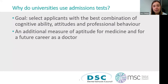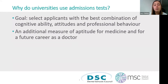So why do we use admissions tests in universities? The goal is to select applicants with the best combination of cognitive ability, aptitudes, and professional behaviours. It's not just about UCAT and BMAT scores — universities also look at your personal statement, your grades at school, and your performance at interview. We're not just looking for those with the best academic ability; we're looking for well-rounded people with the values, skills, and aptitude to be a great doctor or dentist.